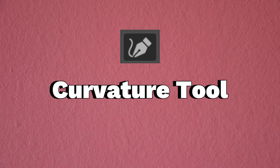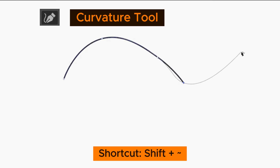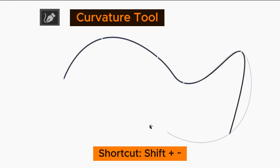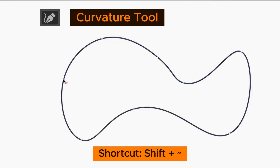The Curvature Tool — shortcut is Shift Tilde. It is similar to the Pen Tool, but automatically creates curved paths.